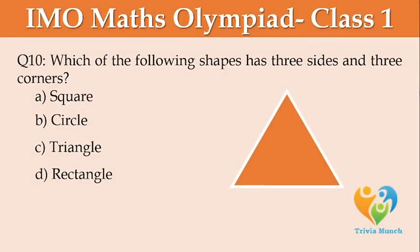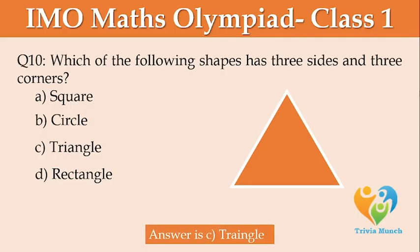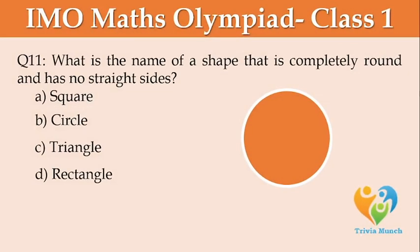Which of the following shapes has 3 sides and 3 corners? Option A: square, Option B: circle, Option C: triangle, Option D: rectangle. What is the name of a shape that is completely round and has no straight sides? Option A: square, Option B: circle, Option C: triangle, Option D: rectangle.